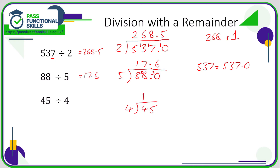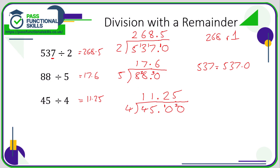45 divided by 4: 4 divided by 4 is 1. 5 divided by 4 is 1 with a remainder of 1. Put in the decimal point top and bottom, add a 0, and park that remainder of 1. 4s into 10 goes twice with a remainder of 2. I can put in another 0 and put the 2 there — 4s into 20 goes five times. So the answer is 11.25. We can keep adding zeros until the division is complete. If you divide by something like 7, this process can go on forever, so the key rule is: when it doesn't divide exactly, put in a decimal point and keep adding zeros until you complete the division.